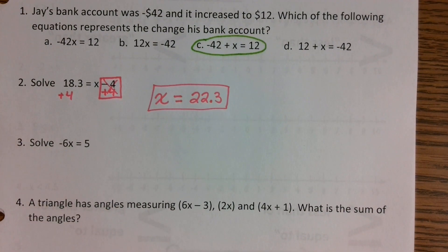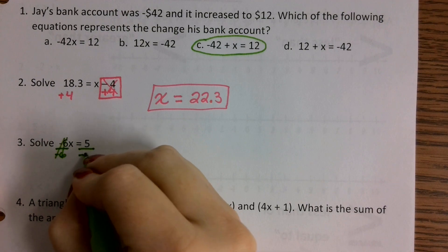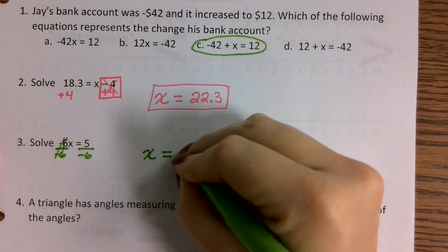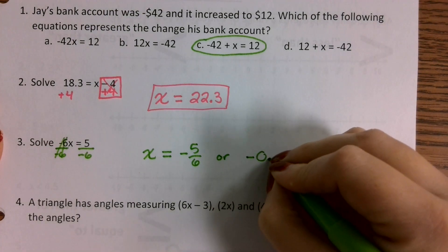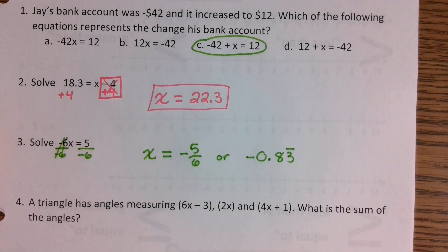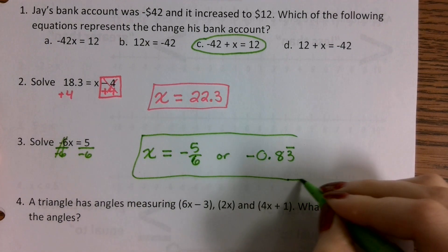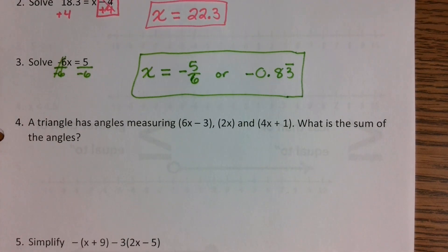For problem number three, we have negative 6x = 5. We divide both sides by negative six, which cancels out the coefficient. We can represent the answer as a fraction — negative five over six — or as a decimal, negative 0.83 repeating. Either format is acceptable, but you need to know how to write both.